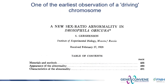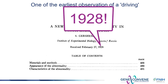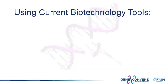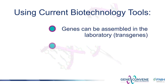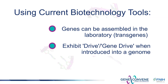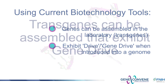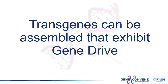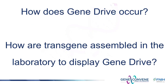Geneticists have been aware of these skewed patterns of inheritance for a very long time. The first observations of drive were made in the early part of the 20th century. Today, with the development of sophisticated genetic engineering tools, it's now possible to assemble genes in the laboratory that display this drive characteristic when introduced into the genome of an organism. So genes, or so-called transgenes, can be engineered or assembled that display gene drive. We'll look at how skewed inheritance can occur in another lesson, as well as how they're being assembled in the laboratory.